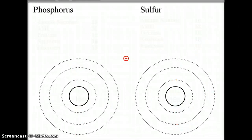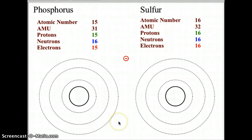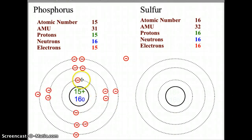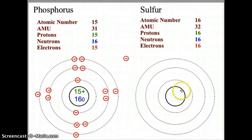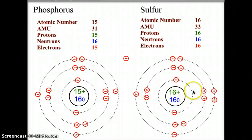Next we have phosphorus and sulfur. Fill in the Bohr model for both, pause the video, then turn it back on to check your answers. Phosphorus has atomic number 15 and an AMU of 31, giving 15 protons and 16 neutrons in the nucleus, with electrons arranged two in the first orbit, eight in the second, and five in the third. Sulfur has atomic number 16 and an AMU of 32, with 16 protons and 16 neutrons, and an electron arrangement of two, eight, and six, for a grand total of 16 electrons.